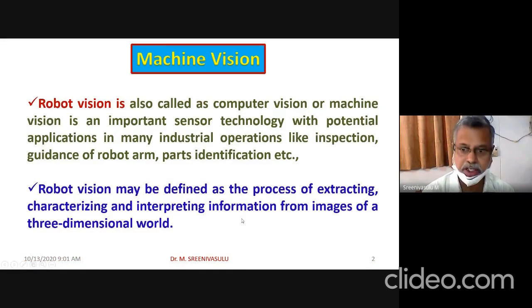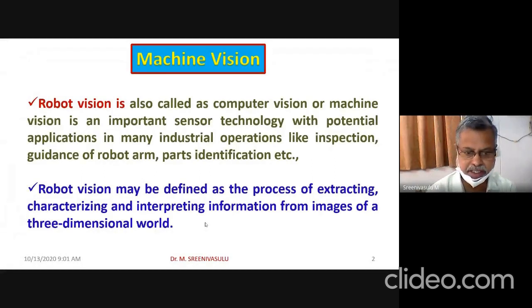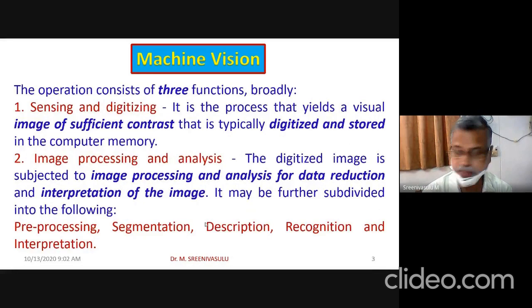RoboVision is also being called computer vision or machine vision. It is an important sensor technology. Basically, if you try to consider the definition for it, it tries to extract, characterize, and interpret information from the images of a three-dimensional world.